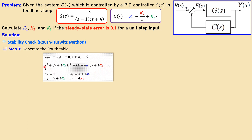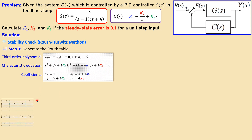We have coefficient a1 in front of s³, a2 in front of s², and so on. This is our third-order characteristic equation and these are the coefficients we use in our Routh table. The table goes from s³ down to s⁰ — four rows. These are the four coefficients from our system, and we also need to calculate b1 through b3 and c1 through c3, then evaluate stability using the first column.